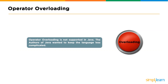There is another thing called operator overloading. Operator overloading is not supported in Java — the authors of Java wanted to keep the language less complicated. Operator overloading is basically a way of bundling operations into a call statement so that it looks like math on paper, like A + B + C all wrapped up in a call to another statement. This gets confusing and isn't necessary, so the Java developers decided not to include it.